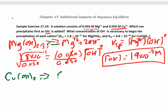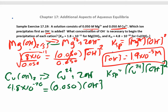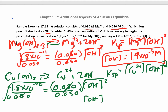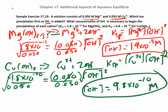For copper(II) hydroxide, Cu²⁺ dissociates with 2 OH⁻, so the KSP is [Cu²⁺][OH⁻]². The KSP is 4.8 × 10⁻²⁰ and the copper ion concentration is 0.050 M. Dividing by 0.050 and taking the square root gives a hydroxide concentration of 9.8 × 10⁻¹⁰ M — that's much smaller. So copper(II) hydroxide precipitates out first because it requires a smaller concentration of hydroxide ions.